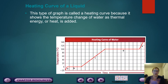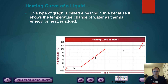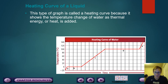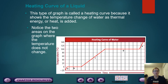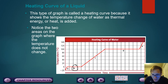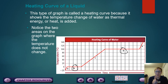Let's get into heating curves — this is the last topic we need to talk about. This type of graph is called a heating curve because it shows the temperature change of water as thermal energy or heat is added. Notice the two areas on the graph where the temperature does not change — we're talking about B here, where our temperature is straight across, and D, right there. Those are two very important parts of our heating curve.